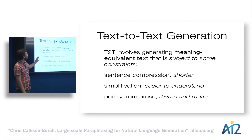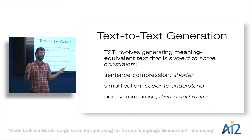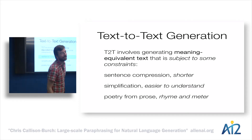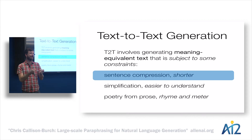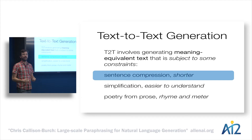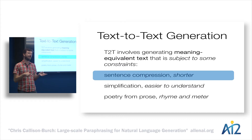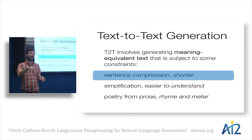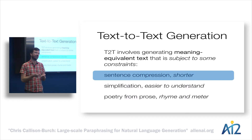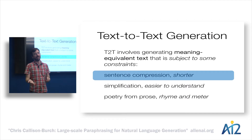There are lots of different text-to-text generation tasks. One I'll show is sentence compression, where you take a longer input and rewrite it to be shorter so you could tweet it and cut down the character count. Another is sentence simplification, where you take some text and rewrite it to be more appropriate for young children at a certain reading level. Or you might even take something written in prose and rewrite it as poetry by imposing a certain meter and rhyming scheme.